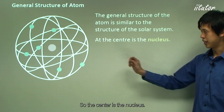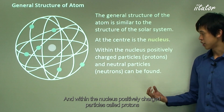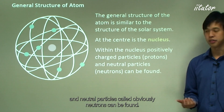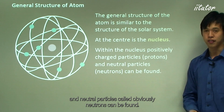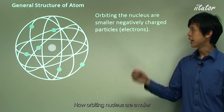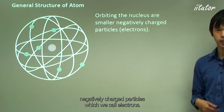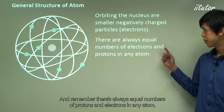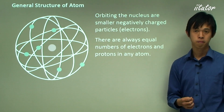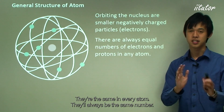The center is the nucleus — that pink dot — and within the nucleus you find positively charged particles called protons and neutral particles called neutrons. Orbiting the nucleus are smaller negatively charged particles called electrons, and there are always equal numbers of protons and electrons in any atom.